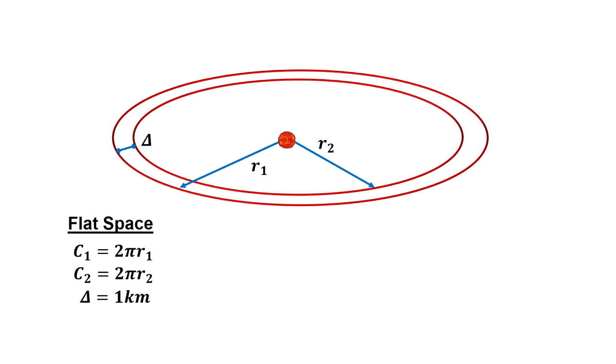But because of our positive curvature, if we were to measure the circumference with a radius that is one kilometer shorter than the first, we'd find that it is less than 2 pi times the shorter radius.